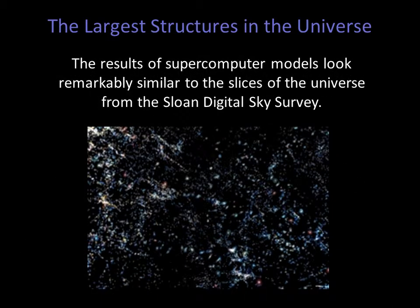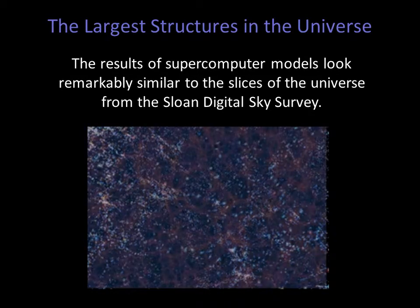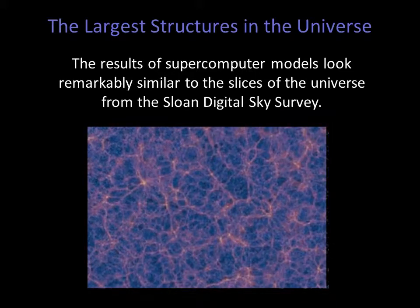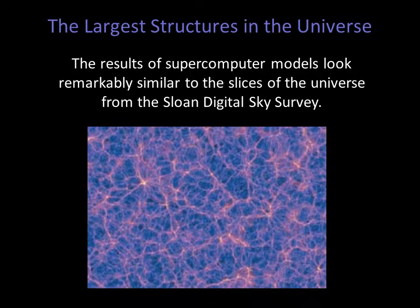Supercomputers can simulate the growth of galaxies, clusters, and large structures, providing models of extremely enormous regions of space. These models show how dark matter, assumed to be WIMPs, should be distributed throughout the entire observable universe. The results of these models look remarkably similar to the slices of the universe from the Sloan Digital Sky Survey. This gives astronomers confidence in our understanding of the role of dark matter in the formation of large-scale structures.